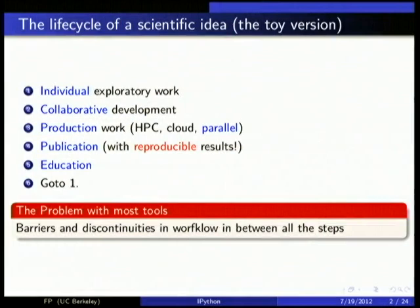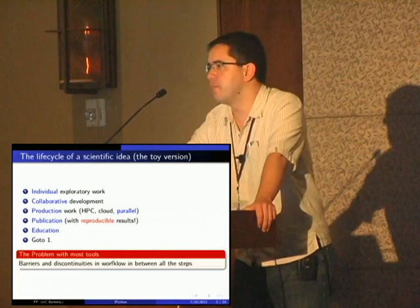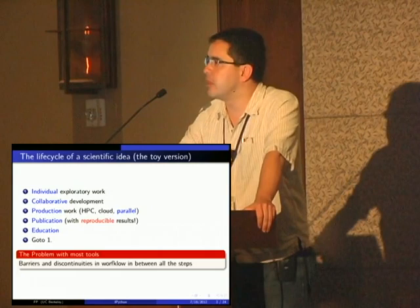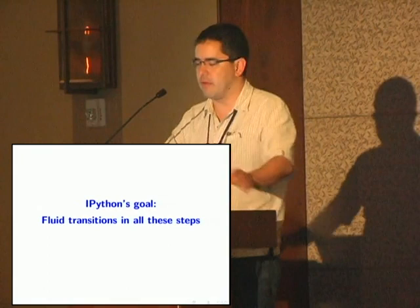Unfortunately, most of the machinery that we have for this kind of work today imposes very unpleasant barriers between each of these steps. We tend to have to change tools and switch gears, which means that the flow tends to be only forward. You can never go back. It's difficult to iterate, reproduce, be flexible and consistent. I want to present IPython as a tool that tries to provide fluid transitions across this workflow and tries to let you manage your scientific thinking.